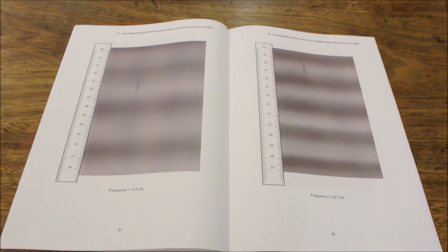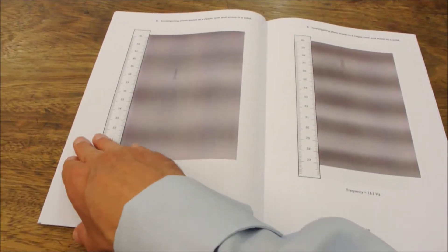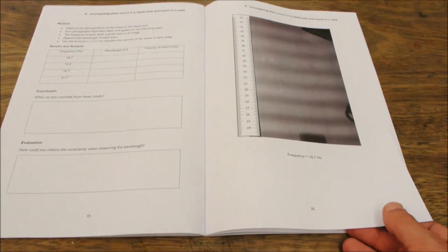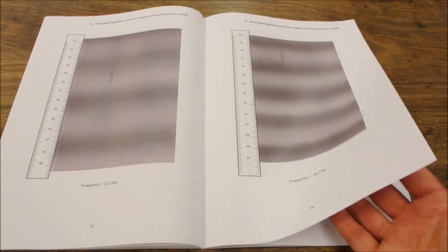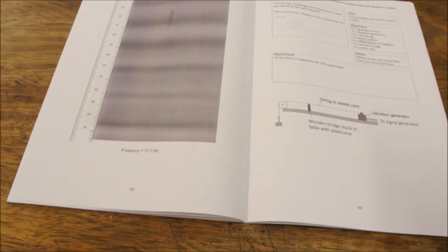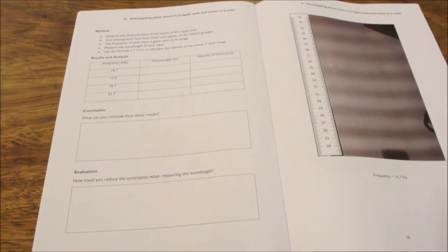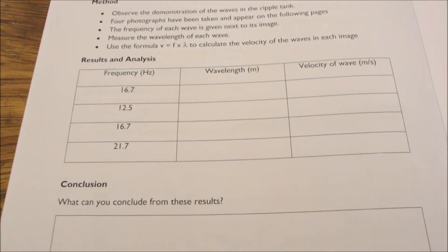So in your laboratory books, what we've done is to provide you with some photographs of some results that we've taken from ripple tanks with a scale down the side. We've given you the frequency at which the waves were produced, and then we're going to ask you to measure the wavelength and then calculate the velocity of the waves in this table here.